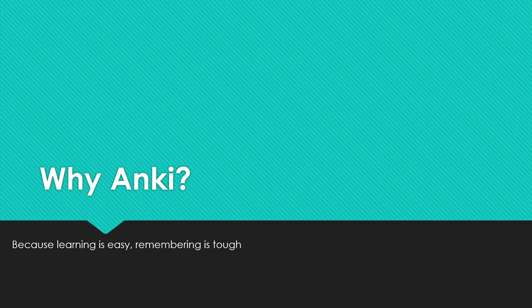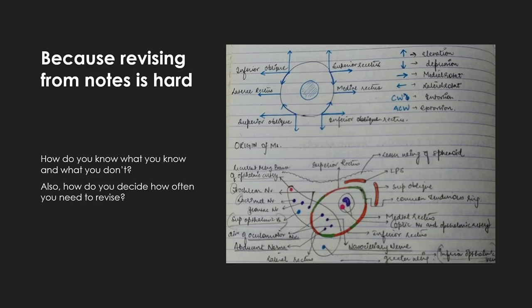So why do you want to use Anki? Because revising from notes is hard. For example, let's say this is one of the images in your notes — a Google image about the superior orbital fissure. You have to remember the contents of the superior orbital fissure, what structures go outside the common tendinous ring and what structures go inside it. The only way to be sure you know this diagram is to redraw it again and again, note what labels you forgot each time, and revisit them. It's a tedious and time-consuming process. So while preparing for the INICET exam, when I had to remember this diagram, I made flashcards for it.